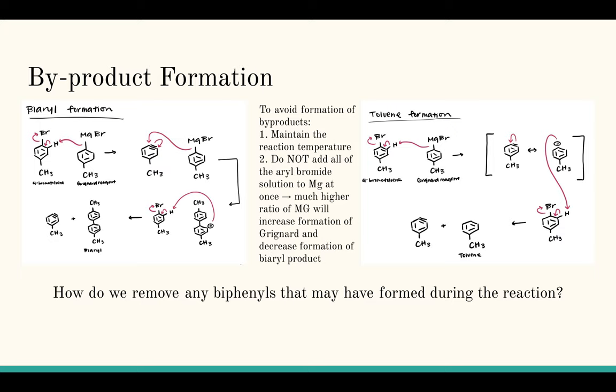So to avoid that, we want to maintain the reaction temperature and not add all of the aryl bromide solution to magnesium at once. Because we want a much higher ratio of magnesium in order to increase the formation of the Grignard product.